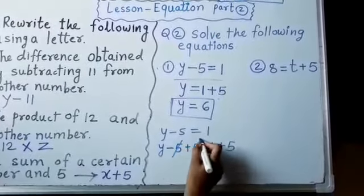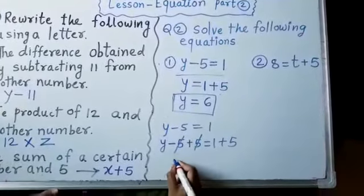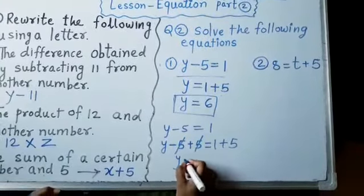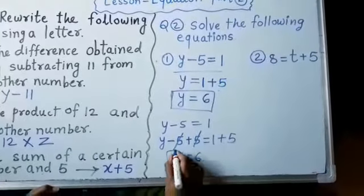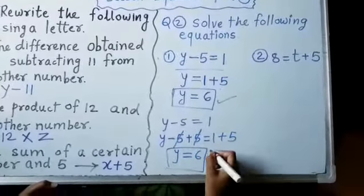This minus 5 plus 5 get cancelled. What is remained? y is equal to 5 plus 1, 6. See, the answer is same.